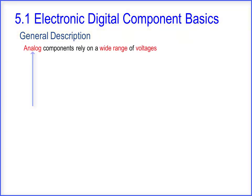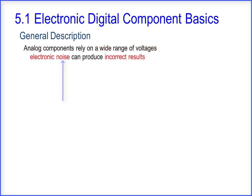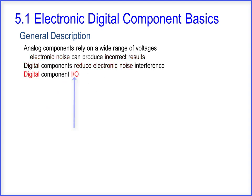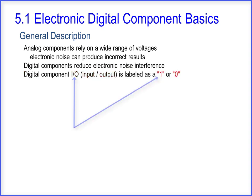Analog components rely on a wide range of voltages, and electronic noise can produce incorrect results. Digital components reduce electronic noise interference. A digital component IO — IO means input and output — is labeled as a 1 or 0.